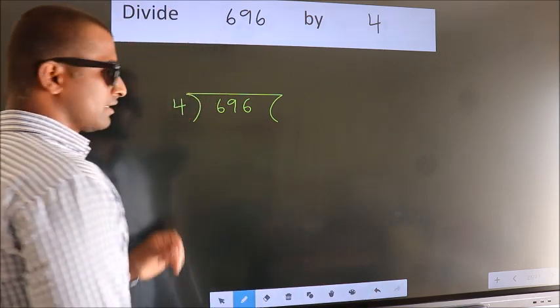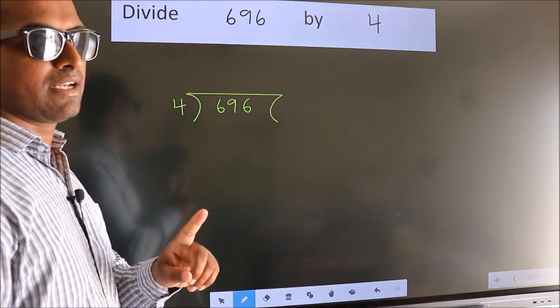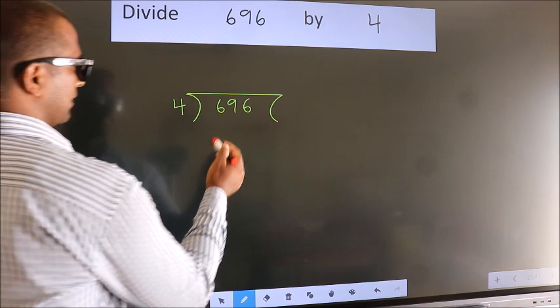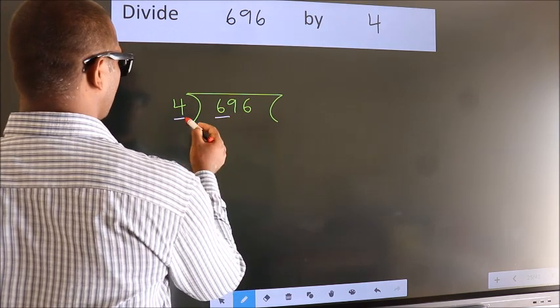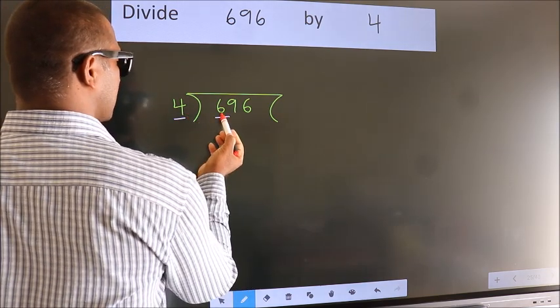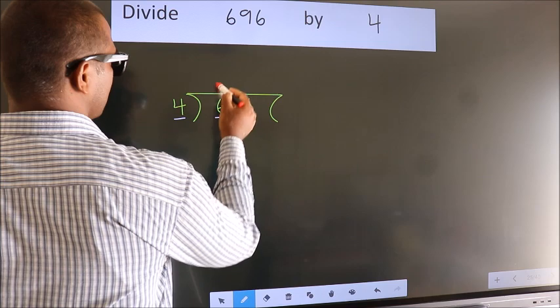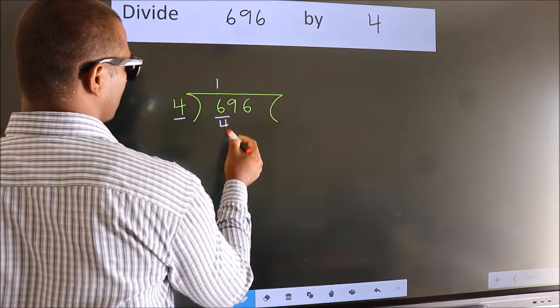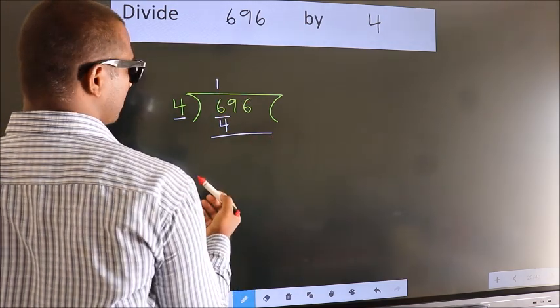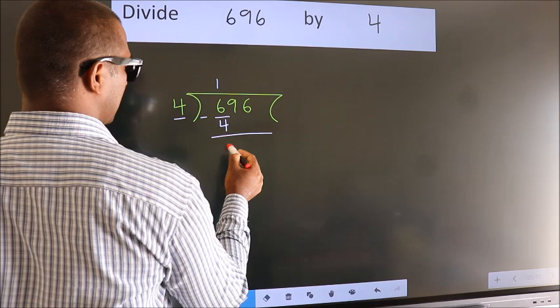This is your step 1. Next, here we have 6, here 4. A number close to 6 in the 4 table is 4, once 4. Now we should subtract. We get 2.